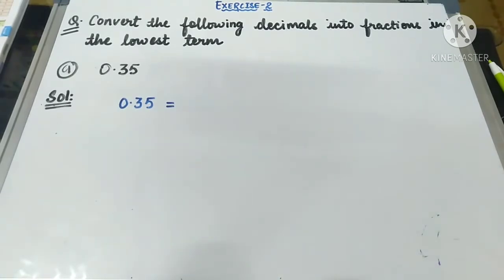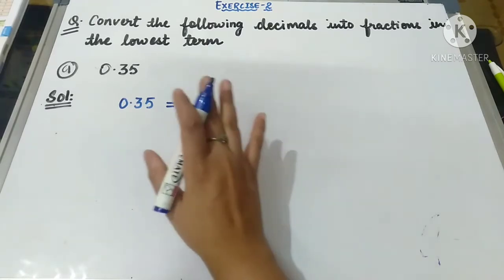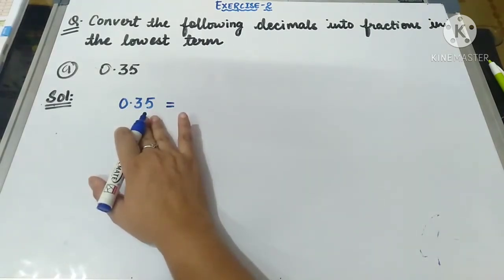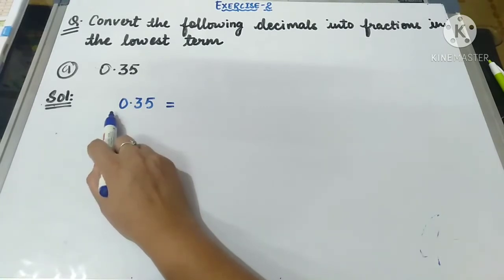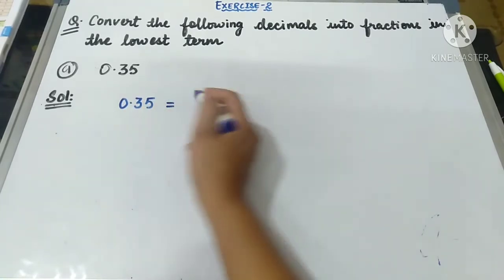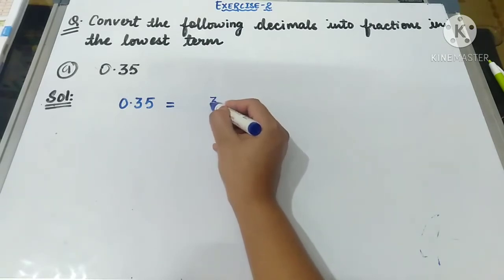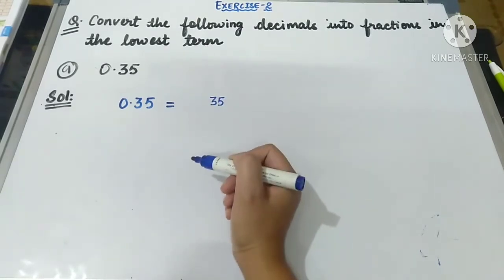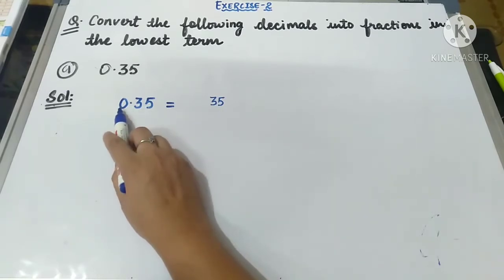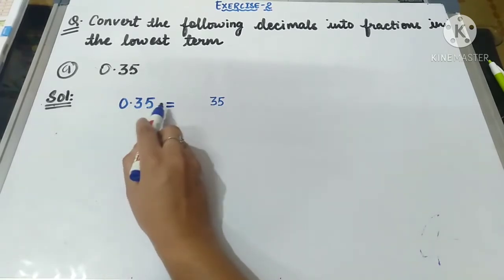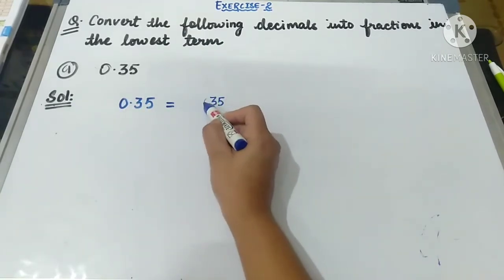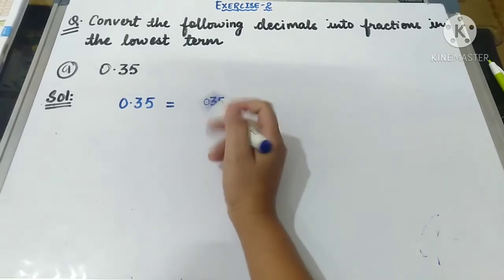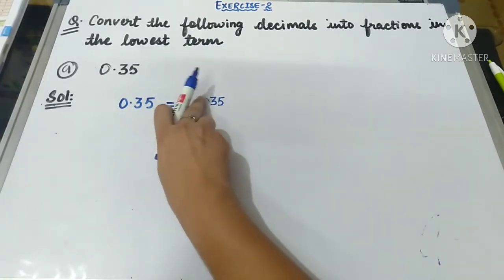For converting, we have to keep in mind some rules. The first rule is: we will write the decimal without the decimal point. So we will not take the decimal point and will write only the numbers in the numerator. If there is a zero before the digits, we don't write it — for example, 0.35 becomes 35 in the numerator since leading zeros are dropped.